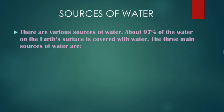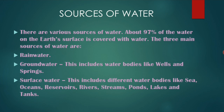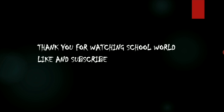Now, sources of water. About 97 percent of water on Earth's surface is covered with water. The three main sources of water are: first, rainwater; second, groundwater, which includes bodies like wells and springs; and third, surface water, which includes water bodies like seas, oceans, reservoirs, rivers, streams, ponds, lakes, and tanks.